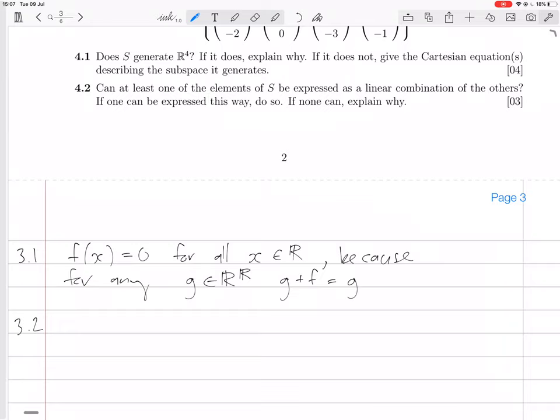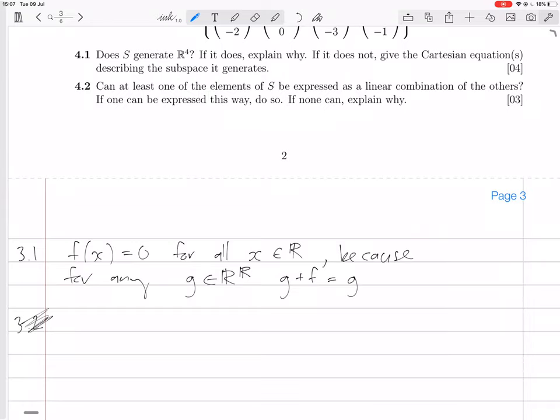3.2. Again, maybe I can do more detail there. g plus f will equal g. Why? Because for all x in R, g plus f of x will equal g of x plus f of x, which will equal g of x, because f of x is zero.